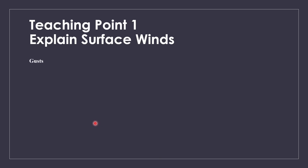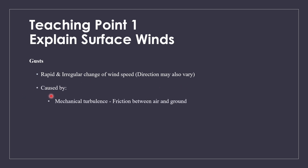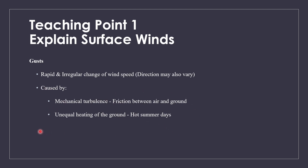Next up is gusts. Gusts are basically rapid and irregular changes of wind speed — in some situations direction may also vary, but that's not a necessity. They are caused by two things: either mechanical turbulence, which is friction between the air and the ground, or unequal heating of the ground. This is most common during hot summer days.